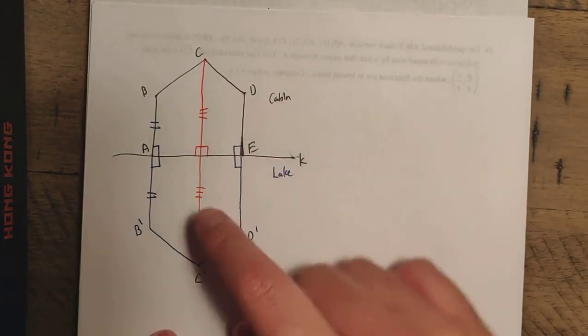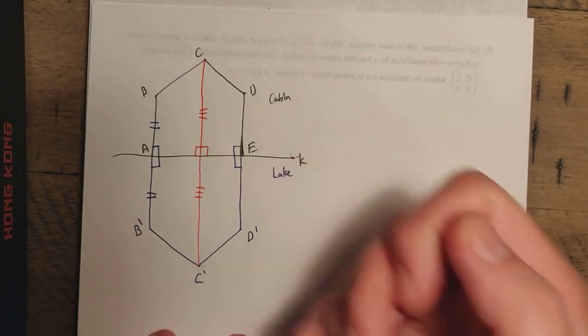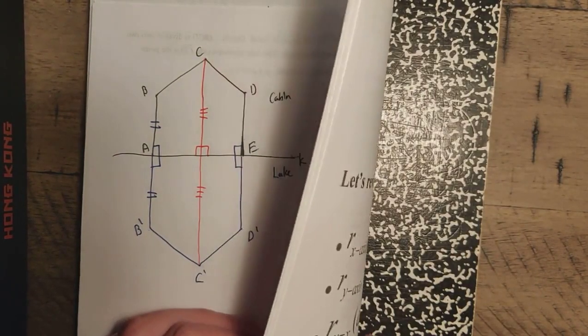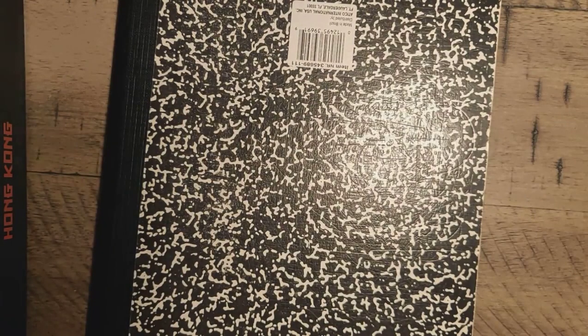So note that in each of these situations, if we connect the point to its image, we're going to end up with a perpendicular bisector here. This line K is a perpendicular bisector. So that actually gives us something very important here. So let me move on to this.